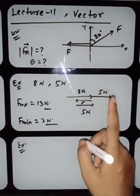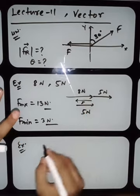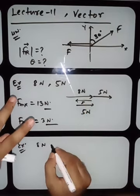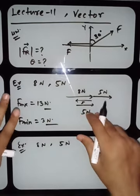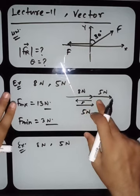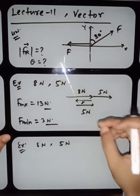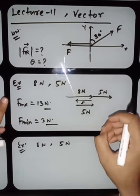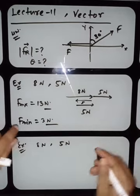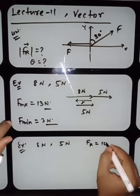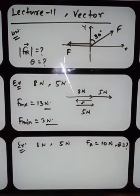Homework question: At what angle are two forces of 8 N and 5 N inclined so that the resultant is 10 N? This is a straightforward question — try to solve it using the resultant formula.